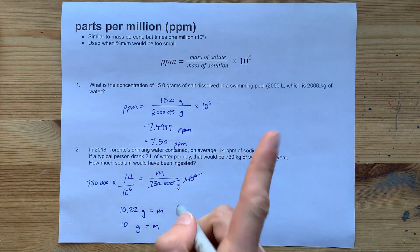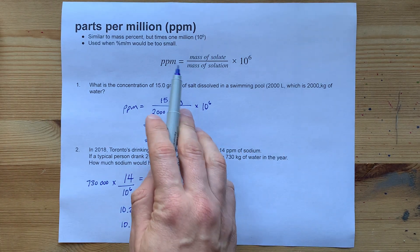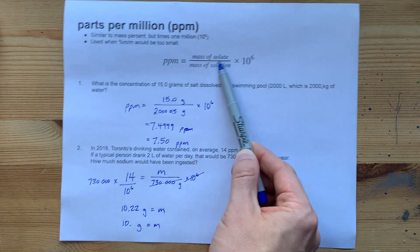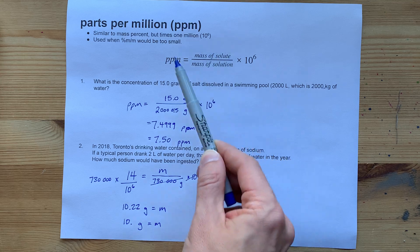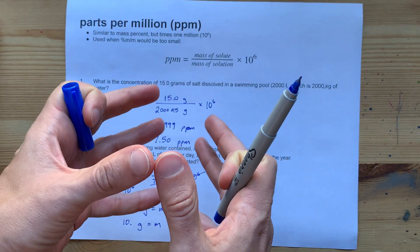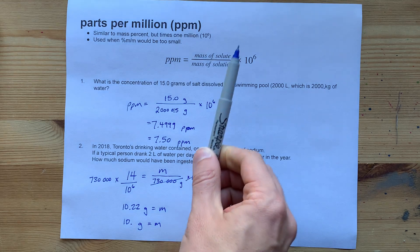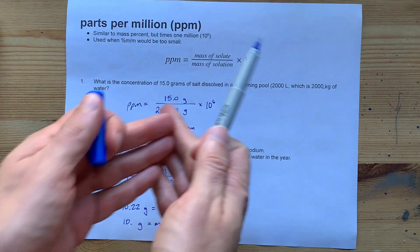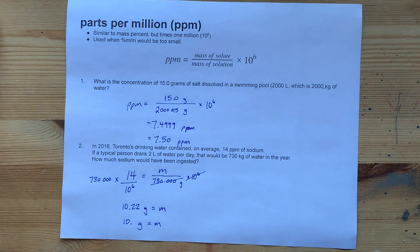That's not the point. The point is ppm is just like mass percent in that you put mass of the thing that's dissolved, the solute, over the mass of the solution. That's the whole thing. And you times it by a million instead of just a hundred like you would for mass percent. Beautiful. Best of luck.